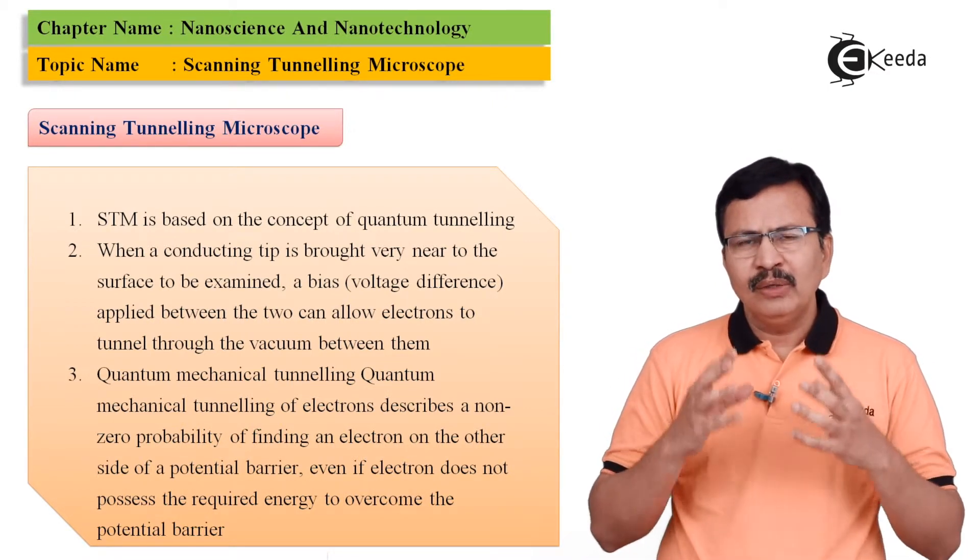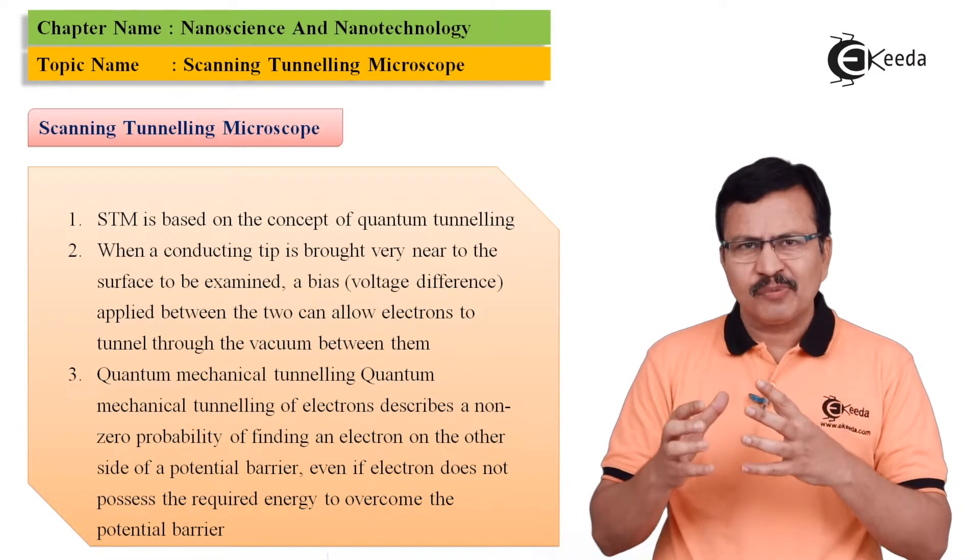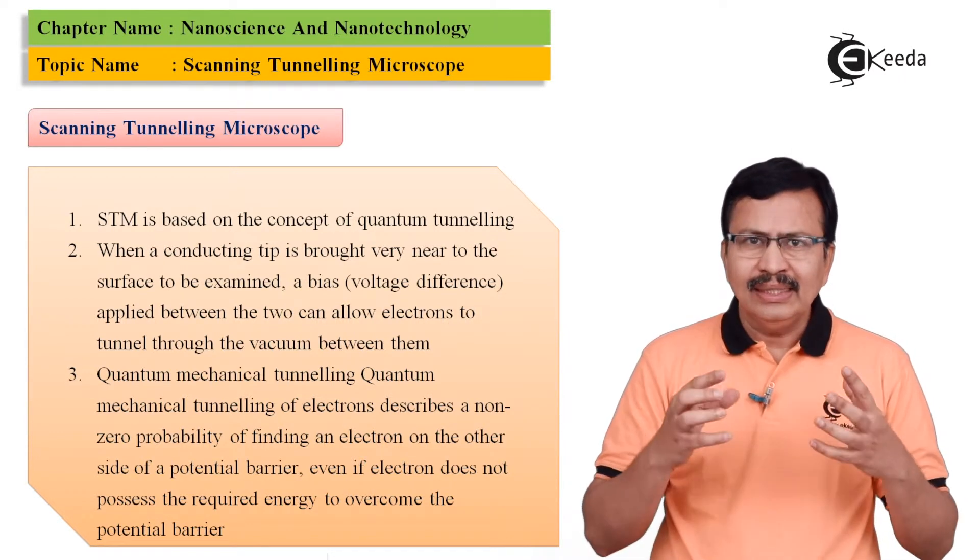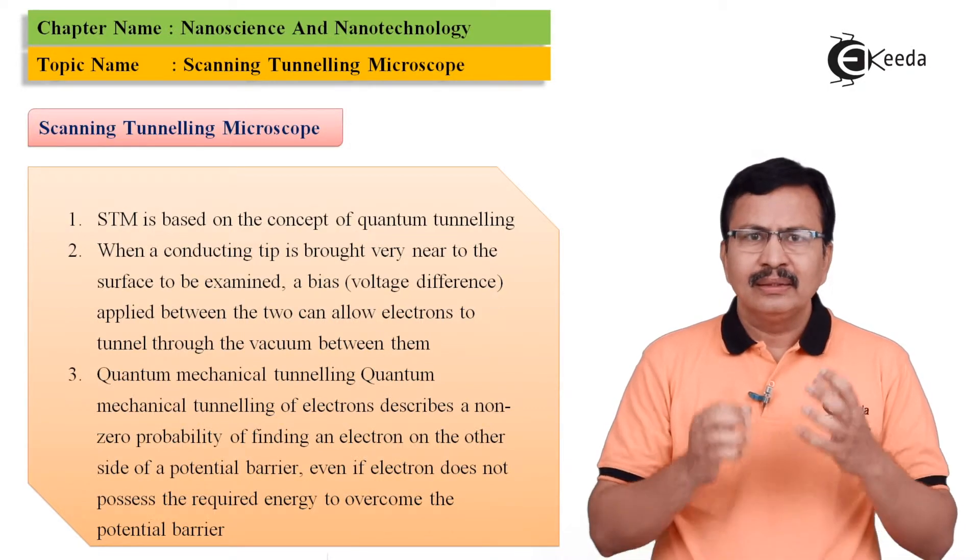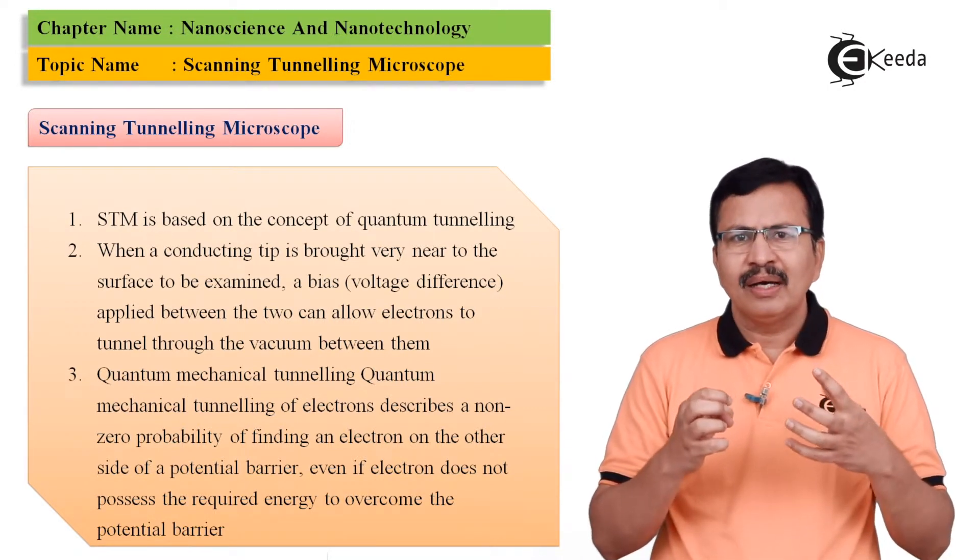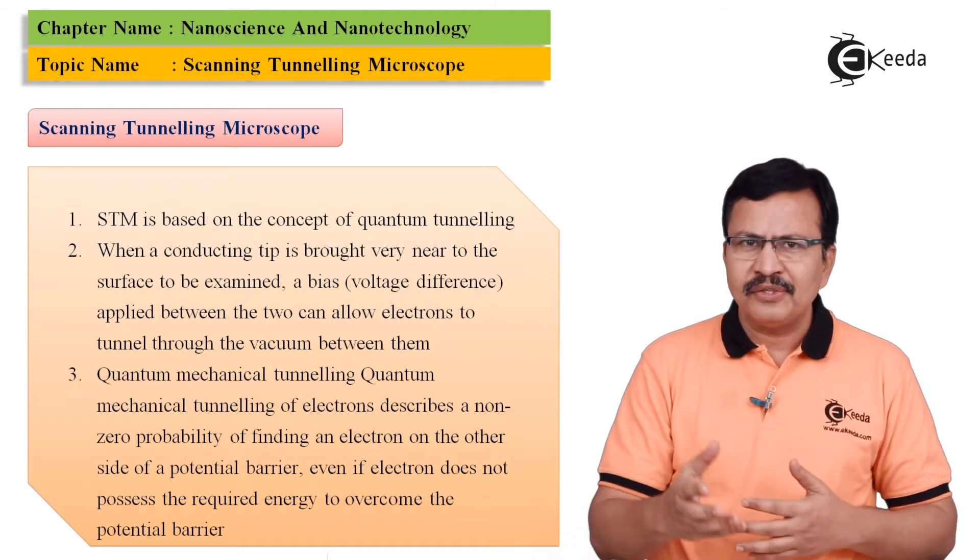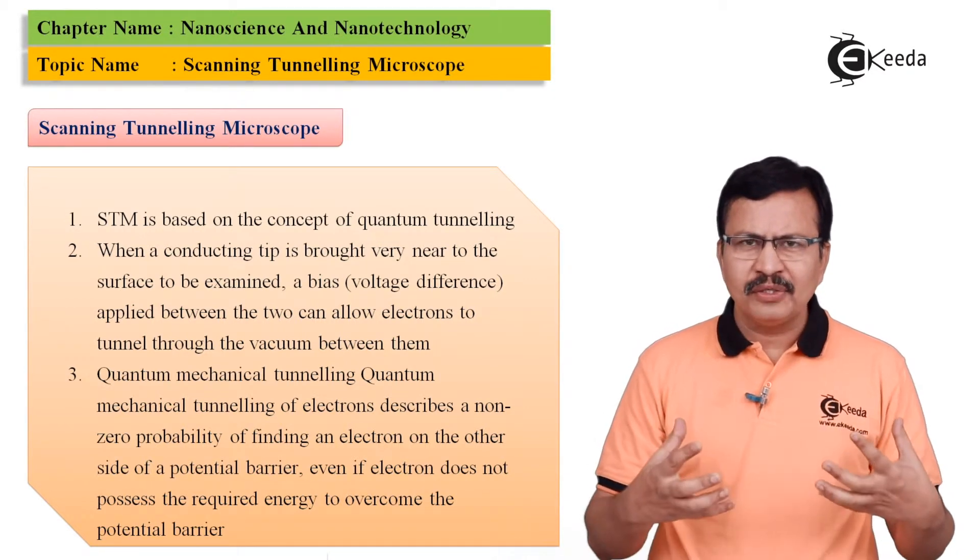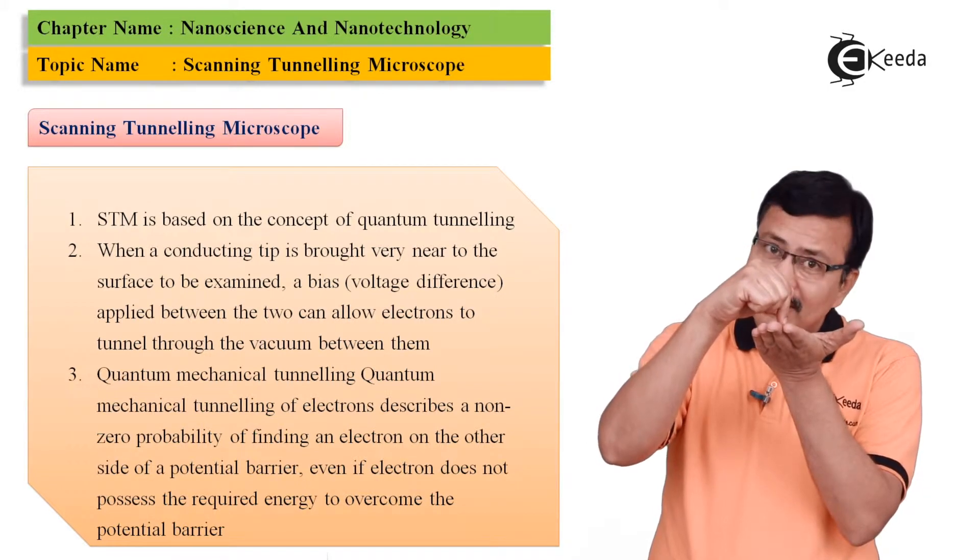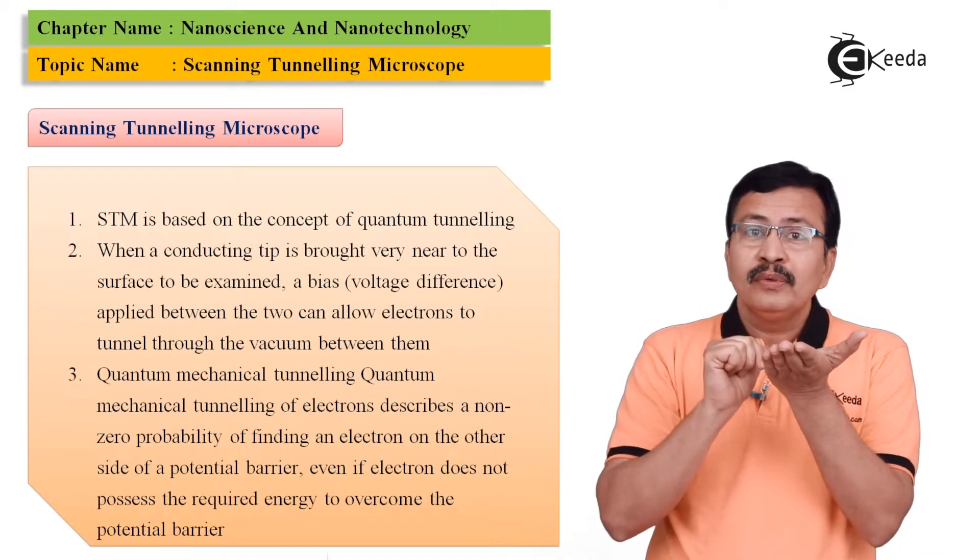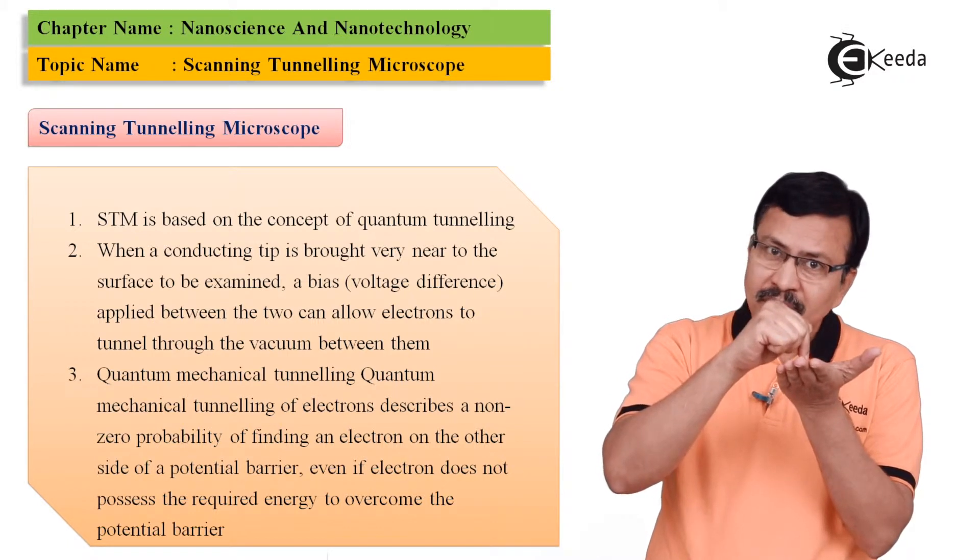Now when we look from the quantum mechanical aspect of it, the tunneling current is basically dependent upon or rather the tunneling current probability is dependent upon many features. One of the features is the potential barrier that exists between the two. This means the tip and the surface.